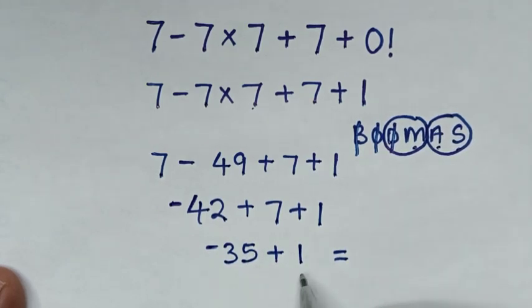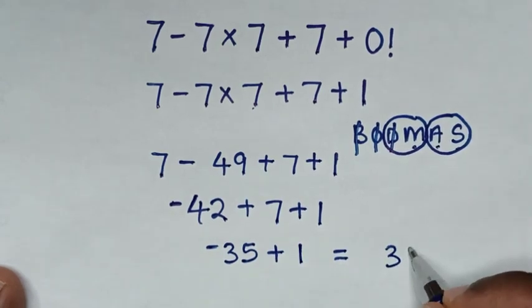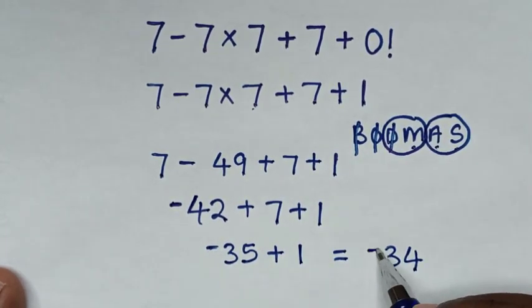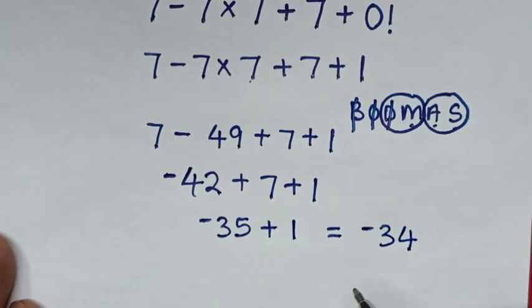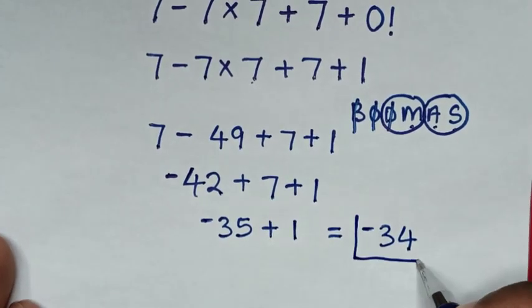Negative 35 is greater than 1, so it will be 35 minus 1 which is 34. And since it was negative, it will be negative 34. Therefore this is our final answer.